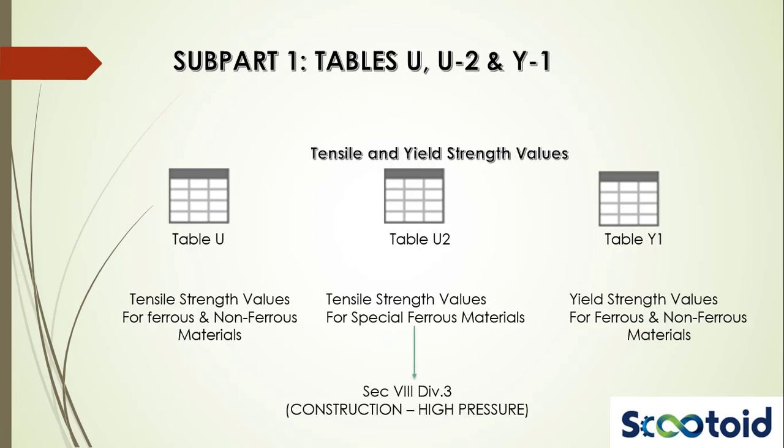Tables 2a and 2b provide design stress intensities for ferrous and non-ferrous materials respectively. These are applicable to Section 3, which covers the rules for the construction of nuclear facility components. Table 4 gives design stress intensities for bolting materials. Table U gives tensile strength values for ferrous and non-ferrous materials at different temperatures. Table U2 provides tensile strengths for special ferrous materials used in the construction of high-pressure vessels, covered in Section 8, Division 3. Table Y1 gives yield strength values for ferrous and non-ferrous materials at different temperatures.